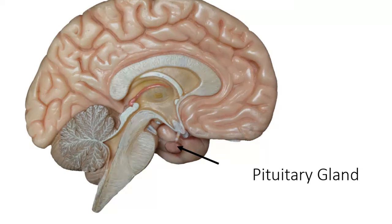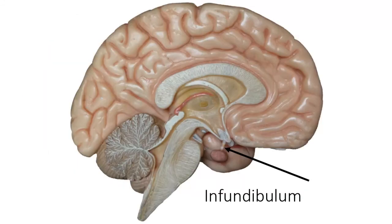There's a link between the pituitary gland and the hypothalamus because they're both part of the endocrine system. This link looks like a candy cane structure — this little guy right there — called the infundibulum. The infundibulum attaches the hypothalamus to the pituitary gland. You'll learn about some of the cool aspects of that structure in Chapter 17.